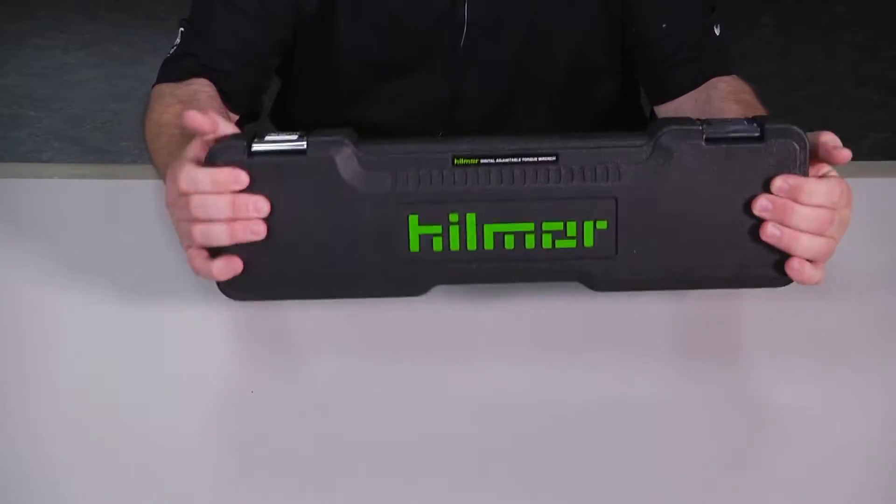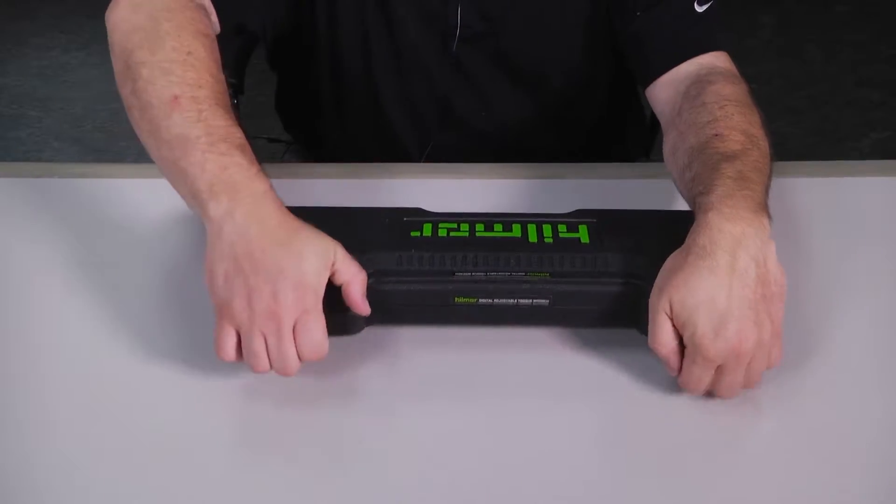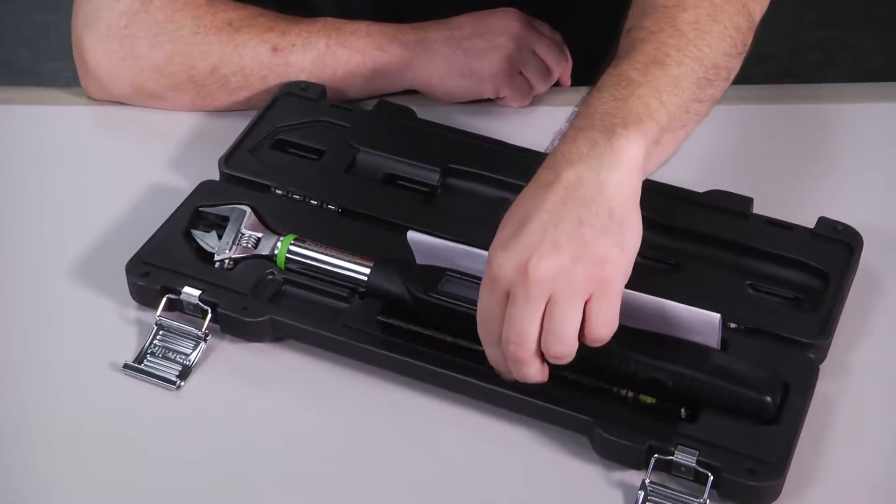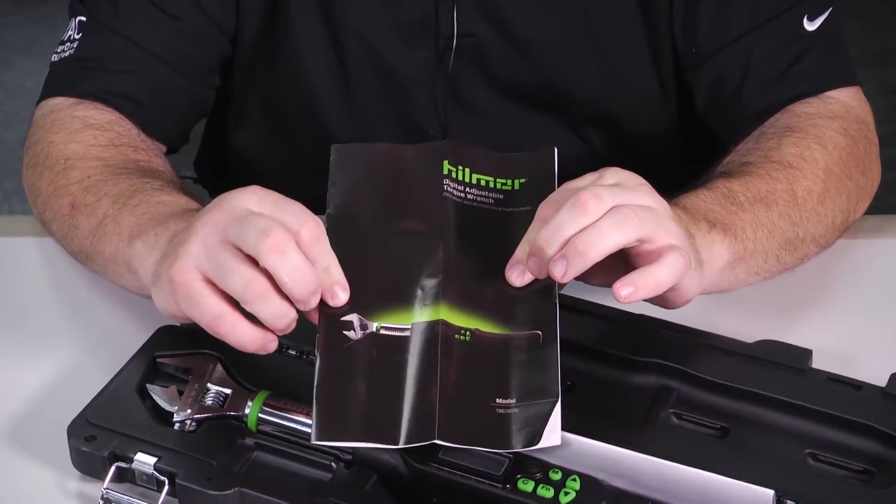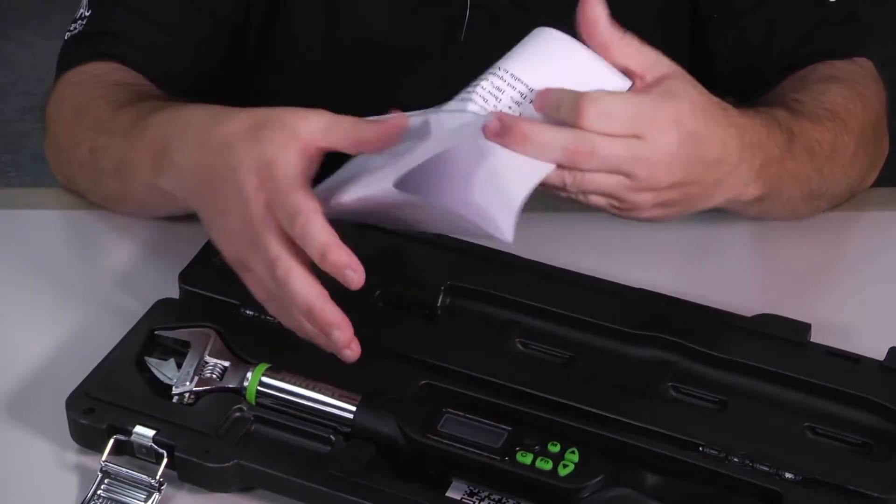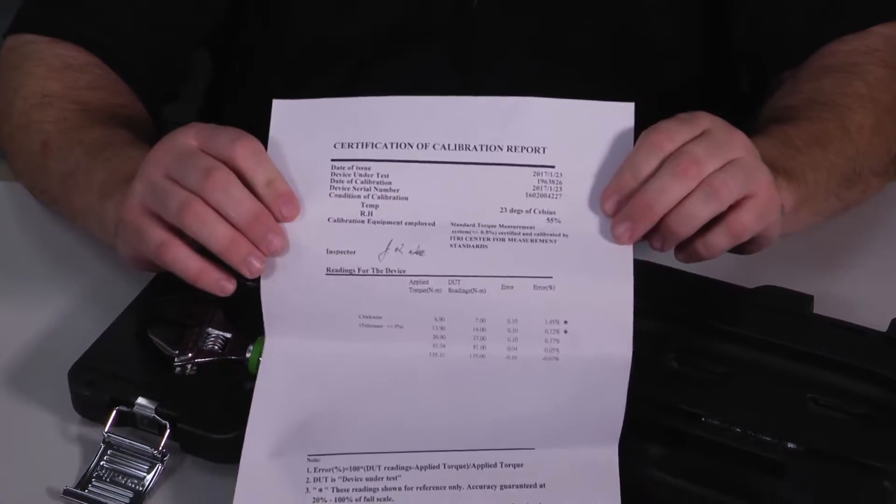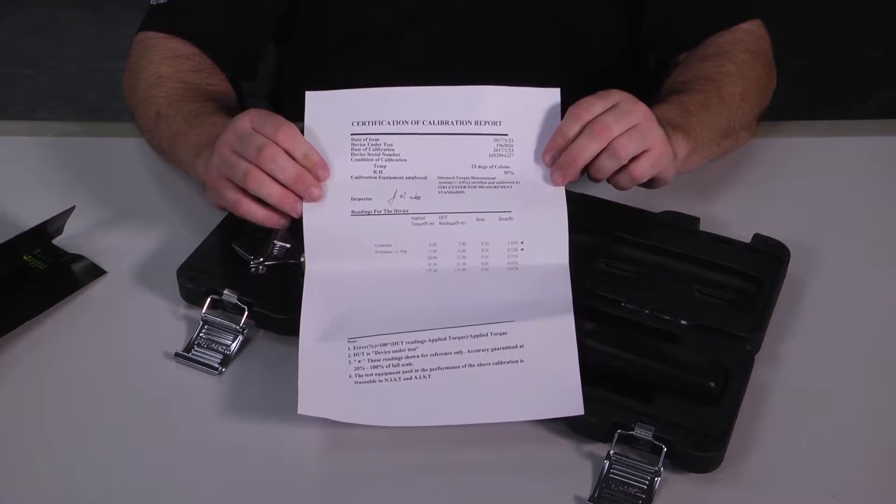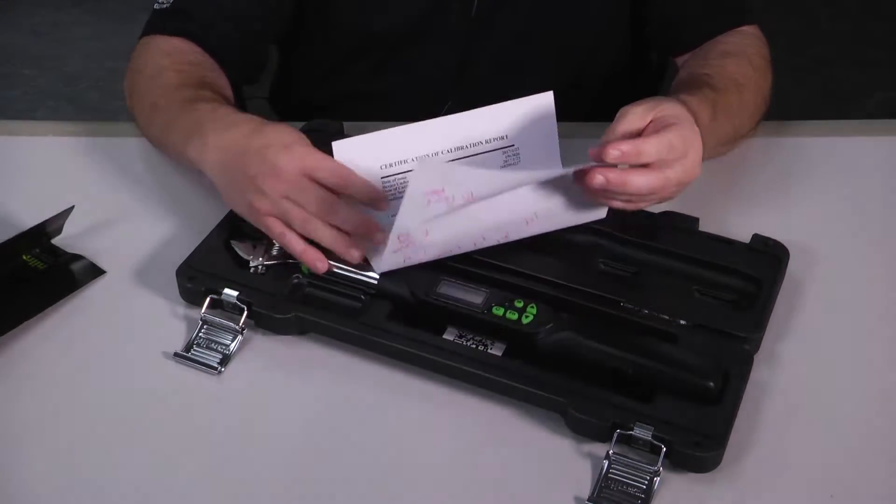First thing you notice is you're going to get a really strong rigid case. Well branded, it's got the Hillmore logo on it. And when we pop it open, you've got your digital torque wrench, you've got your user's manual to tell you how to set it all because there's some pretty neat specs and features in this. And you're going to receive a certificate of calibration, letting you know that it's set up right. Pretty important if we're trying to dial down things like flare nuts, service valve caps, compressor bolts, motor mounts, that we have the right torque specs and we have it set right. So here's your certification letter letting you know it's been certified.